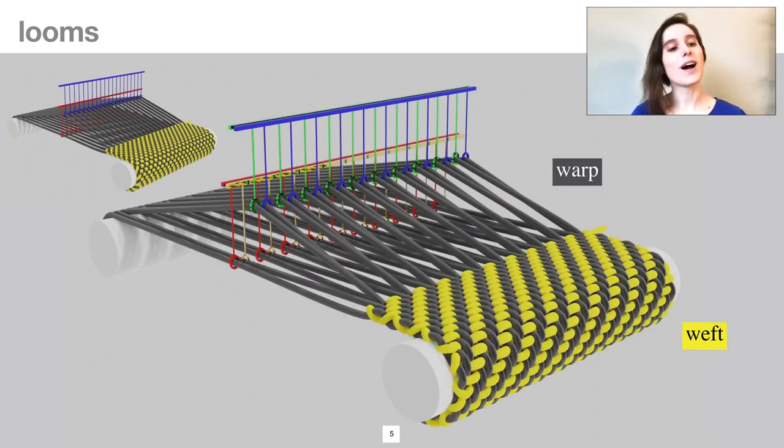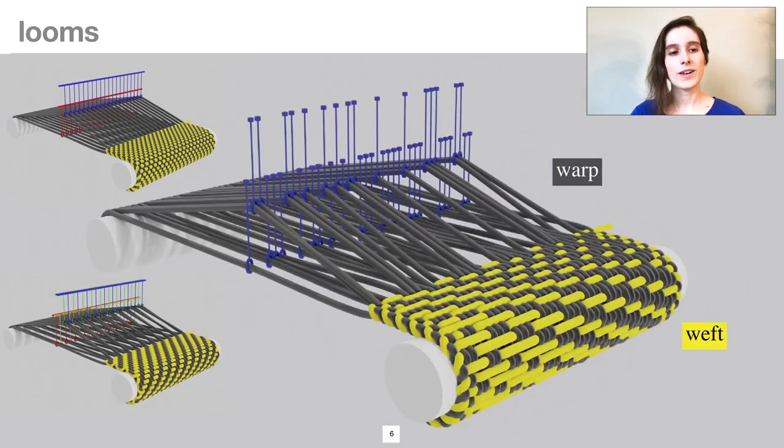However, to get those very complex structures, what you really need is the ability to separately select any of the warp threads. This is what is called a fully Jacquard loom.